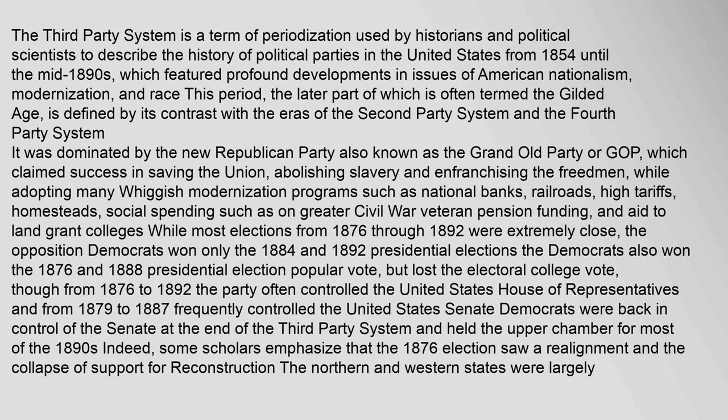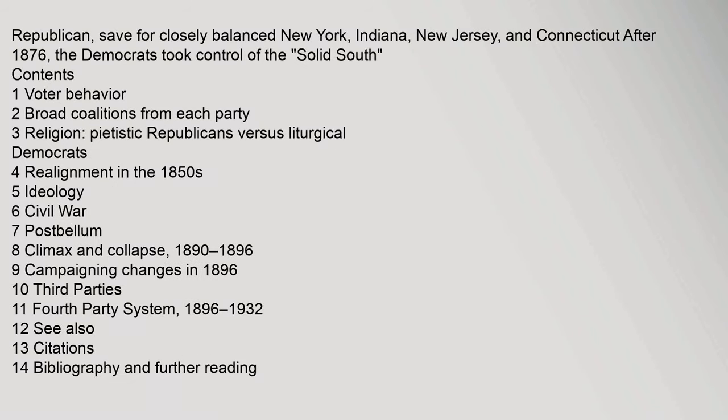Democrats were back in control of the Senate at the end of the third-party system and held the upper chamber for most of the 1890s. Indeed, some scholars emphasize that the 1876 election saw a realignment and the collapse of support for Reconstruction. The northern and western states were largely Republican, save for closely balanced New York, Indiana, New Jersey, and Connecticut. After 1876, the Democrats took control of the solid South.